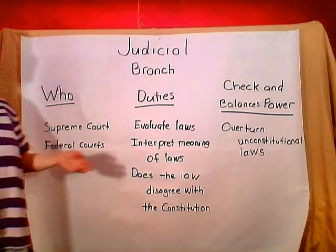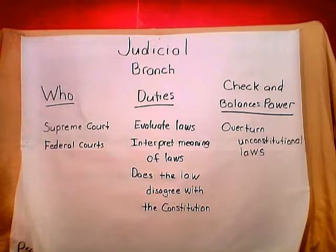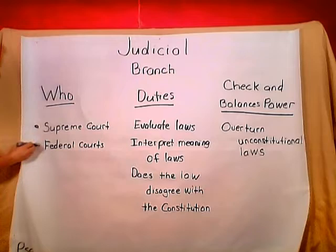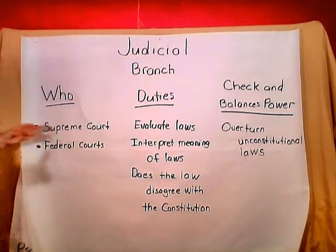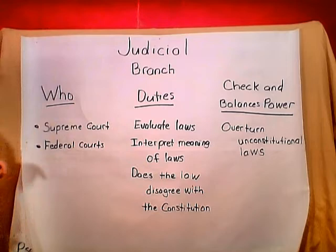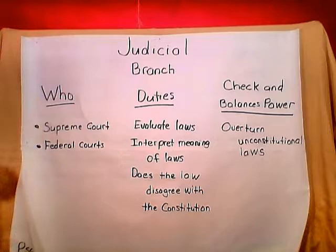In our judicial branch we're going to talk about who is in it, the duties, and the checks and balances power that they have. Who is in the judicial branch? Well, first we have the Supreme Court, then we have the federal courts. The Supreme Court is the highest court in the land — they make the final decision on any cases or decisions that have to be made. There are also other federal courts that help make decisions, but the Supreme Court is the highest in the land.